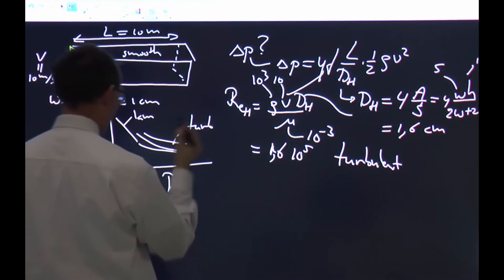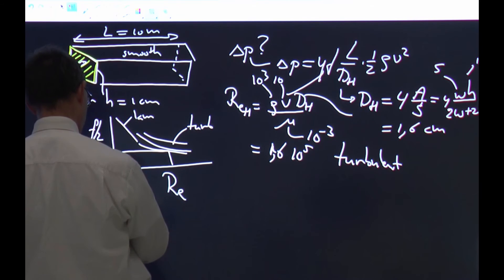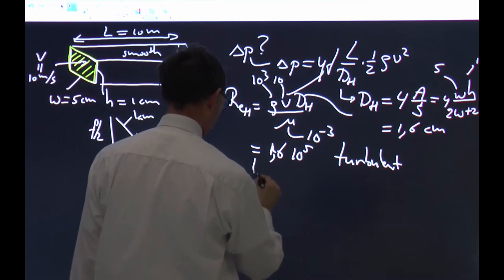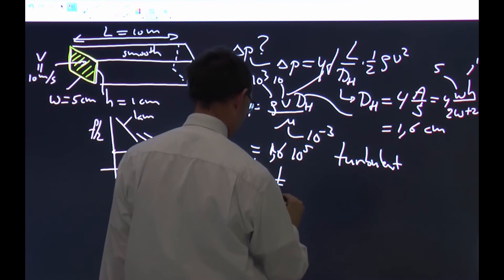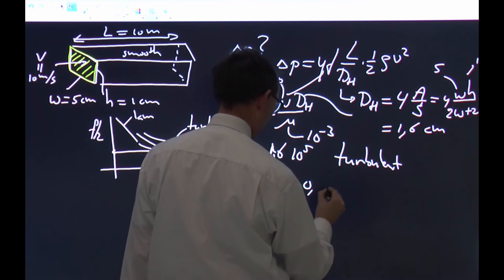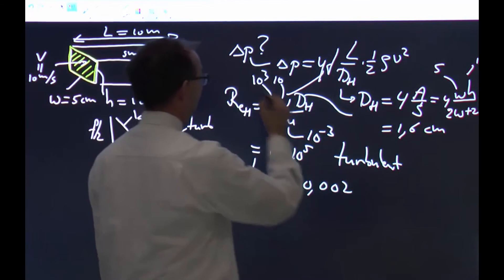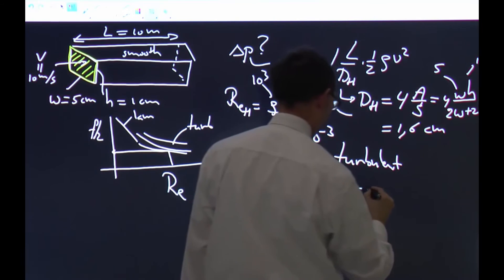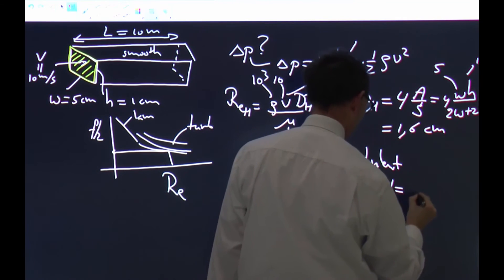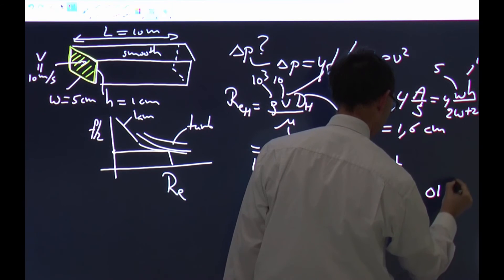We know our Reynolds number, so if you look at the real graph, you can read off, at this Reynolds number, f over 2 is this value, which in this case would give f over 2 equals 0.002, if you read the graph. And thus, we need 4f, 4f equals 0.016.